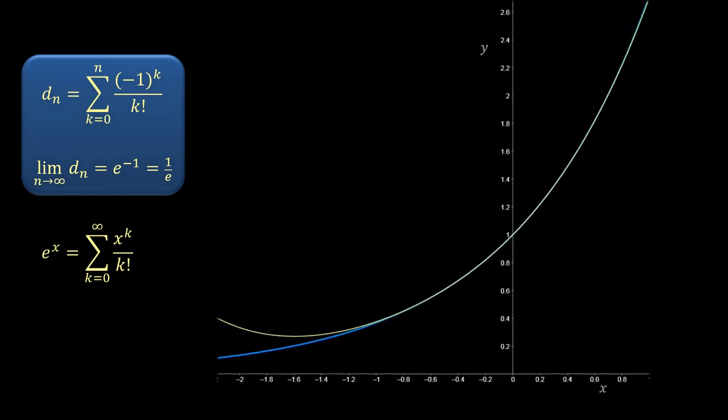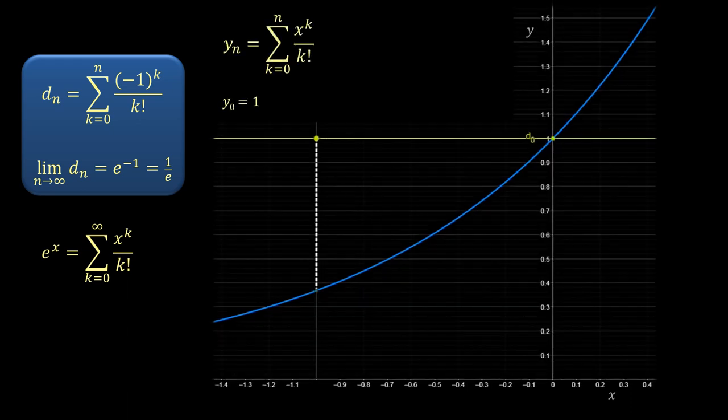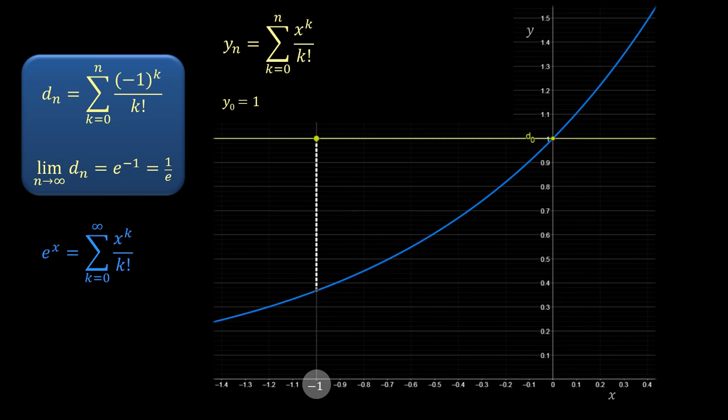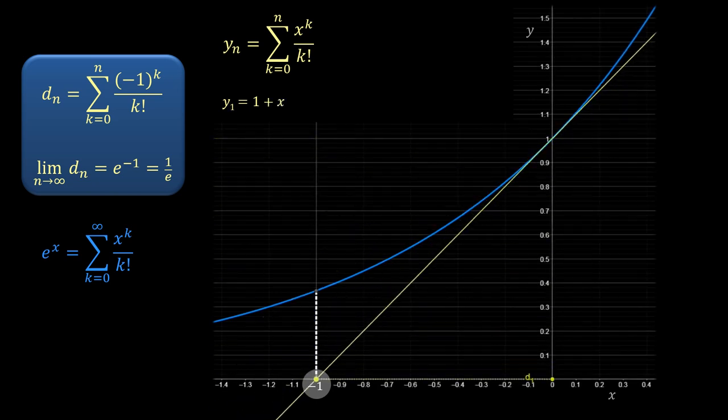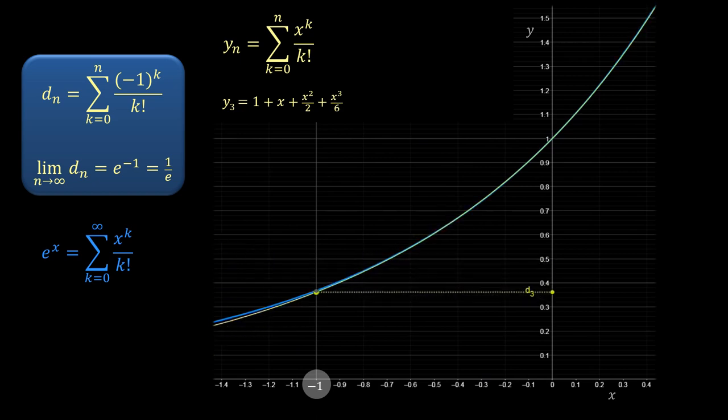Let's zoom in on the region of interest to see how quickly the series converges for x equals minus 1, while the n values will be projected onto the y-axis. Pretty quickly, as you can see. At this scale, all noticeable changes occur up to n is about 6.